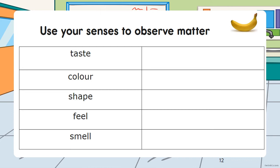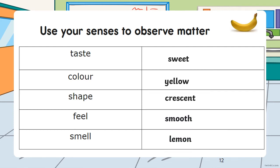We use our senses to observe matter — taste, color, shape, how it feels, and how it smells. Let's look at the banana: the taste is sweet, the color is yellow, the shape is crescent, how it feels is smooth, and the smell is lemony. Those are the properties of matter.